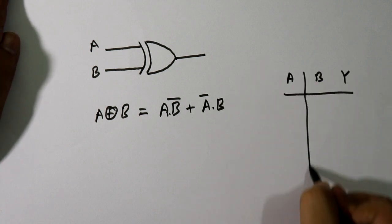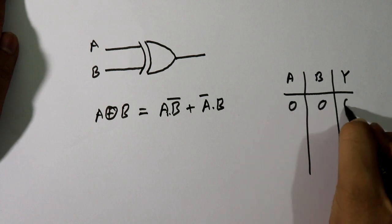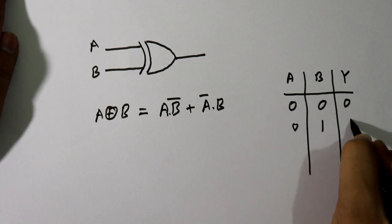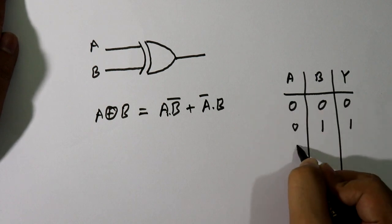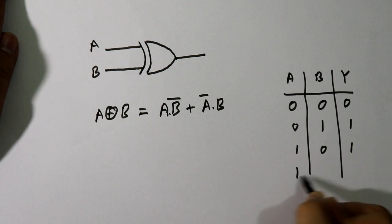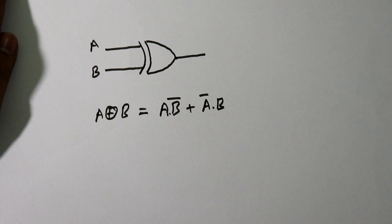Its truth table is: A, B, and Y is output. 0, 0 → 0; 0, 1 → 1; 1, 0 → 1; 1, 1 → 0.